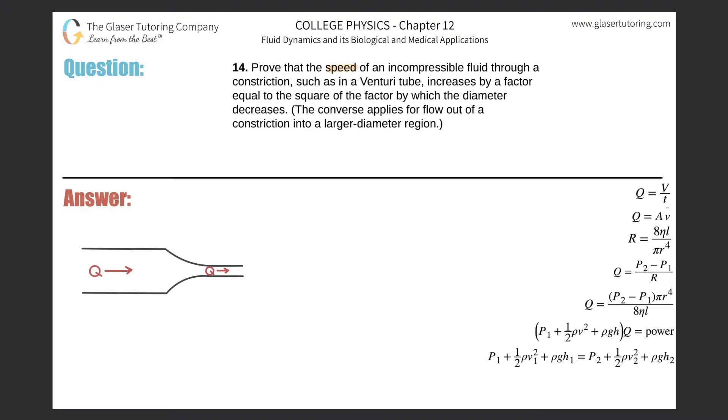Number 14, prove that the speed of an incompressible fluid through a constriction, such as in a Venturi tube, increases by a factor equal to the square of the factor by which the diameter decreases.